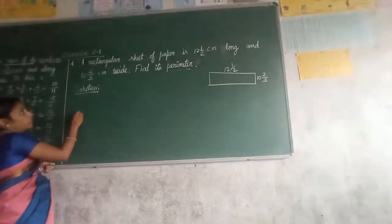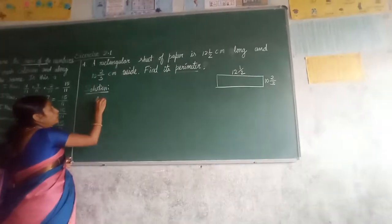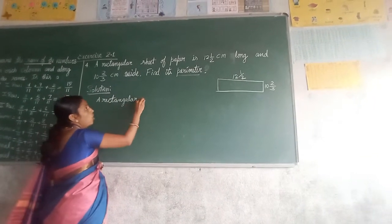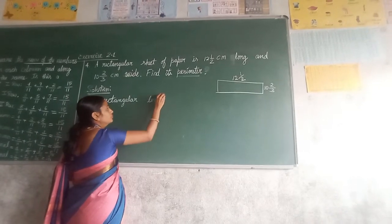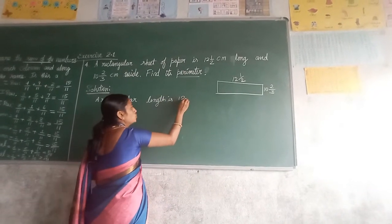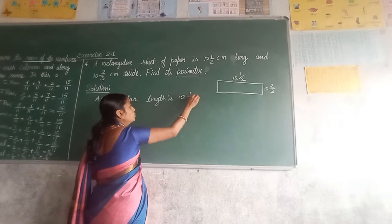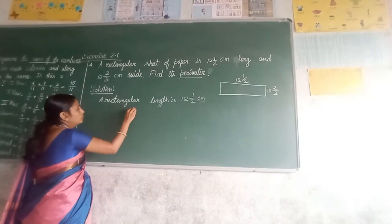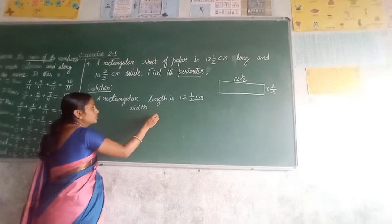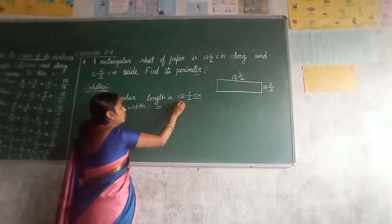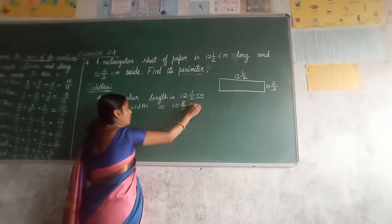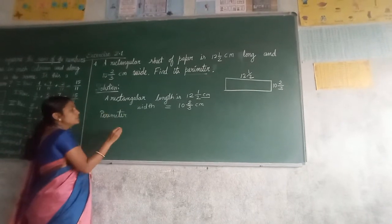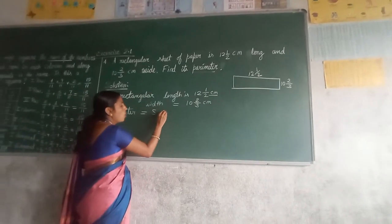First, given things you take down. A rectangular length is 12 and 1 upon 2 centimeter. This is more important. You must write the unit. Then width, 10, 2 upon 3 centimeter. Now they are asking you perimeter. Perimeter means sum of all sides.